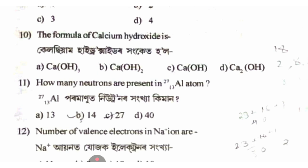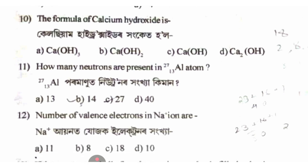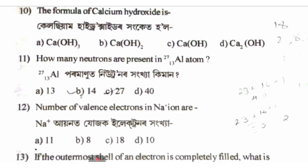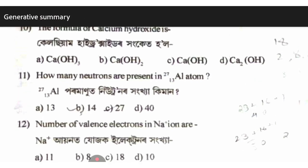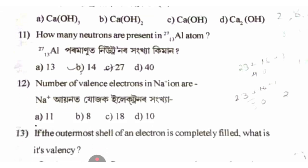For aluminum with atomic number 13 and mass number 27, the number of neutrons is 27 minus 13 equals 14. The answer is option B.